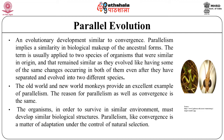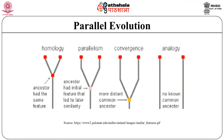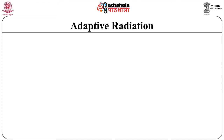Parallelism, like convergence, is a matter of adaptation under the control of natural selection. The lack of a tail in a gibbon on one hand, and the great apes and humans on the other, is probably a case of parallelism, since their common ancestor probably had tails that were lost in a parallel fashion in separate evolutionary lines after they diverged. This figure illustrates different types of evolution: in homology the ancestor had the same feature; in parallelism the ancestor had an initial feature that led to later similarity; in convergence they had a more distant common ancestor; and in analogy no common ancestor is known.